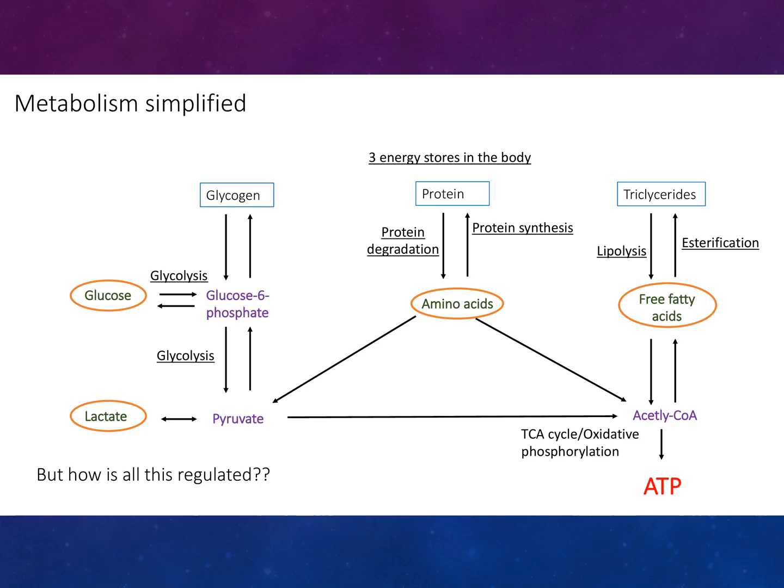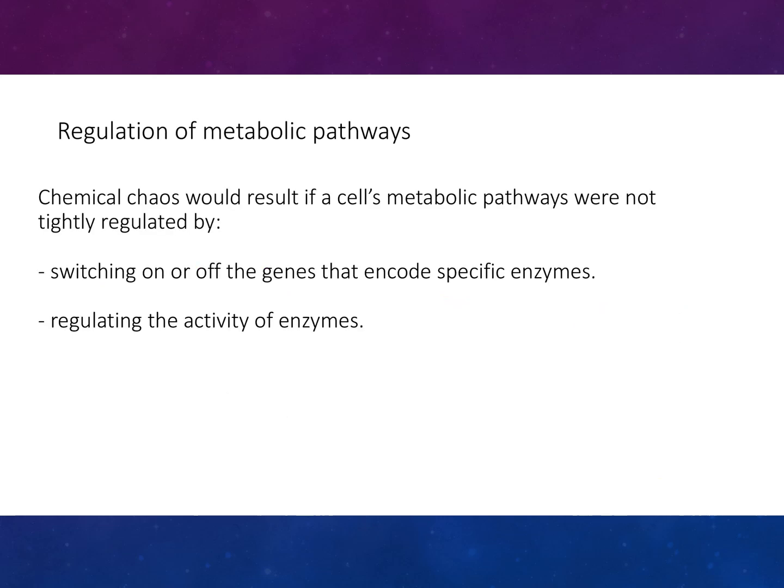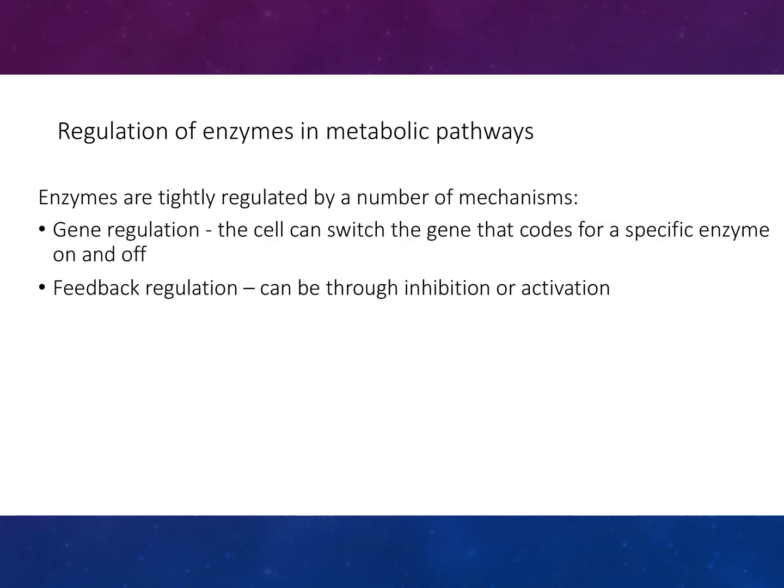Regarding regulation: chemical chaos would result if a cell's metabolic pathways were not tightly regulated. This is achieved by switching on or off genes that encode specific enzymes, or by regulating the activity of enzymes directly.